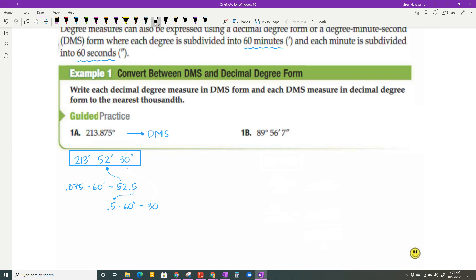Now let's go the other way. We have, in part B, we have 89 degrees, 56 minutes, and 7 seconds. And this time we're going to change that to the decimal degree form. So again, when we do that, we're starting off with 89 degrees. Those degrees don't change on either one of them.